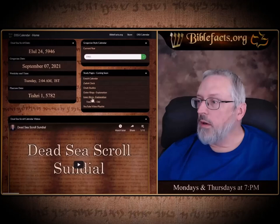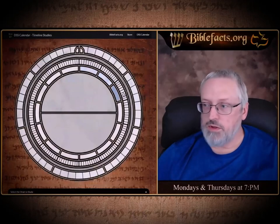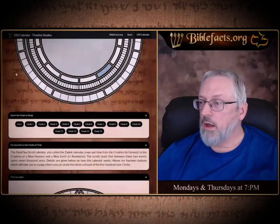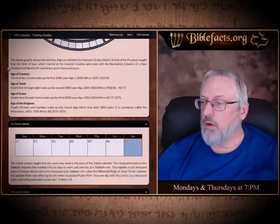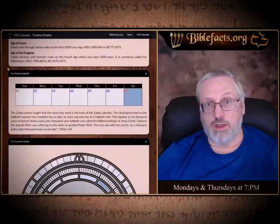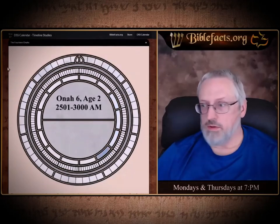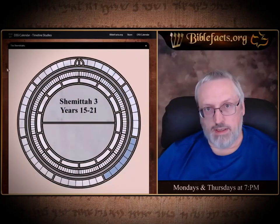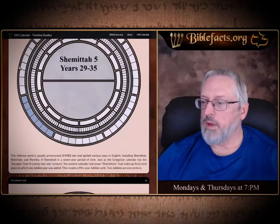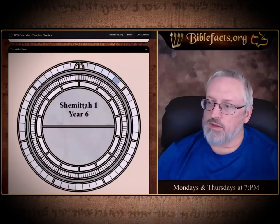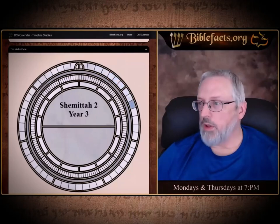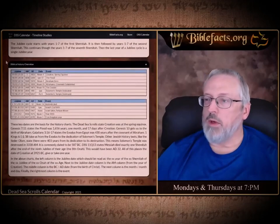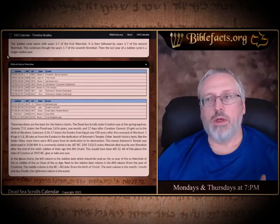Let me go back to the inner rings again. This is a graphic of how it works. We've looked at the four ages, the weekly Sabbath teaching about the 7,000 years, the 14 Onas and their ages, the years they go by, the Jubilee year (the 50th), the seven Shemitahs inside a Jubilee plus one year, and then the Jubilee cycle. The last thing I wanted to show — because people ask — is: how do we know it's 5946?